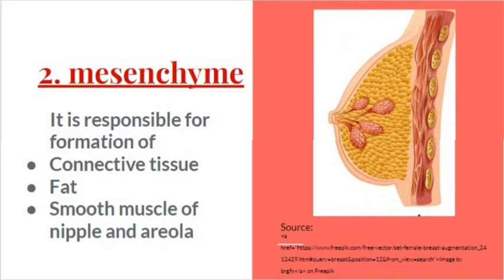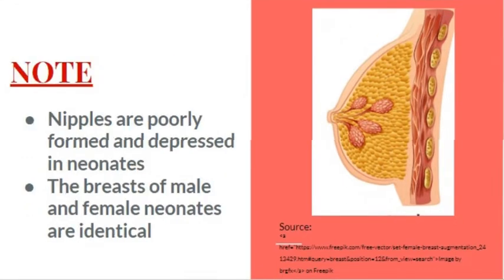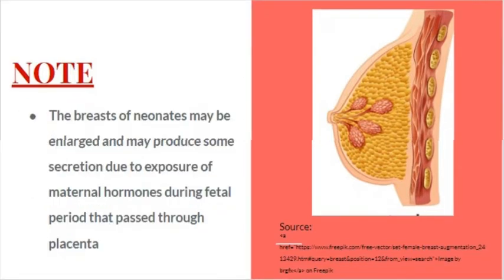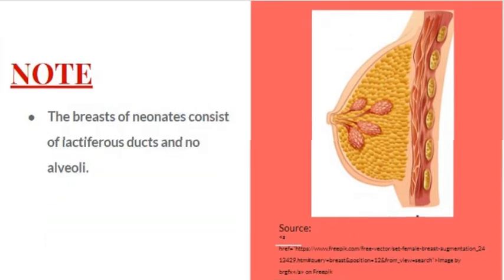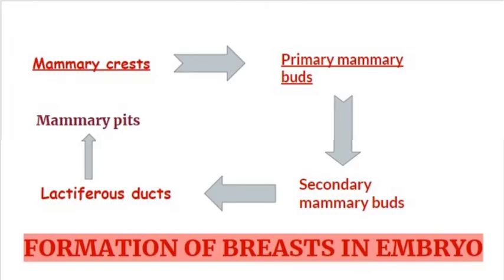and smooth muscle of the nipple and areola. Note: nipples are poorly formed and depressed in neonates. Neonates are children in the first 28 days of life. The breasts of male and female neonates are identical. The breasts of neonates may be enlarged and may produce some secretion due to exposure to maternal hormones that pass through the placenta and enter the fetal circulation. The breasts of neonates consist of lactiferous ducts and no alveoli.